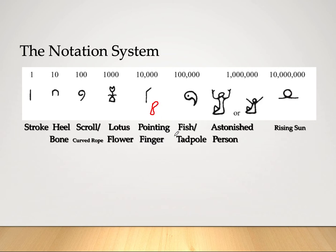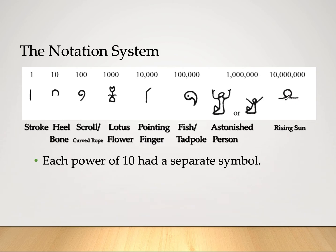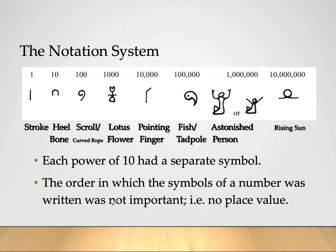Continuing the Egyptian number symbols: 10,000 is a pointing finger, 100,000 is a fish or tadpole, 1,000,000 is the astonished man — a figure with arms raised praising the sky, sometimes drawn as a stick figure — and 10,000,000 is the rising sun. So each power of 10 had a separate symbol. The order in which the symbols of a number were written was not important for Egyptians — there is no place value. As long as you can see those pictures written somewhere, they add up to the value of the number.